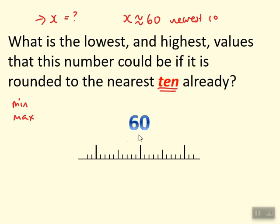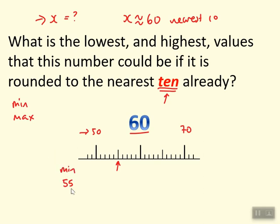If we look at this number line, here's 60 right in the middle, so this would be 70 and this would be 50. The number is rounded to the nearest 10. The smallest it could be would be 55, because 55 would round to 60 and anything below 55 would round down to 50. So 55 has got to be the smallest possible number that would round to 60 — you look at the digit to the right, it's five or more, so it rounds up to 60.